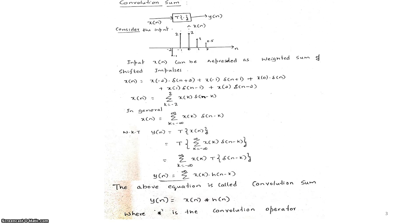Since y(n) = T{x(n)}, substituting x(n) gives y(n) = T{summation over k from -∞ to +∞ of x(k)·δ(n-k)}. Bringing the operator inside the summation, and knowing that when the input is δ(n) the response is h(n), it follows that when the input is the shifted impulse δ(n-k), the output is h(n-k). Therefore y(n) = summation from -∞ to +∞ of x(k)·h(n-k). This equation is called the convolution sum, written as y(n) = x(n) * h(n), where * is the convolution operator.